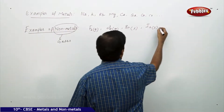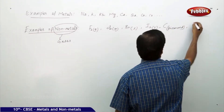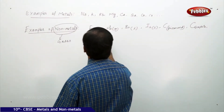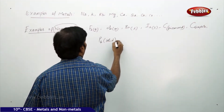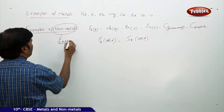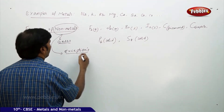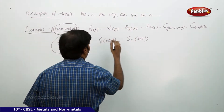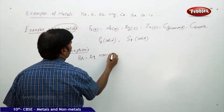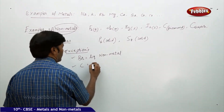But sometimes non-metals exist as solids. Carbon is available in the form of diamond and graphite. Phosphorus (P4) is a solid, and sulfur is also a solid. Exceptions include bromine, which is a liquid non-metal, and carbon, which is a solid non-metal.